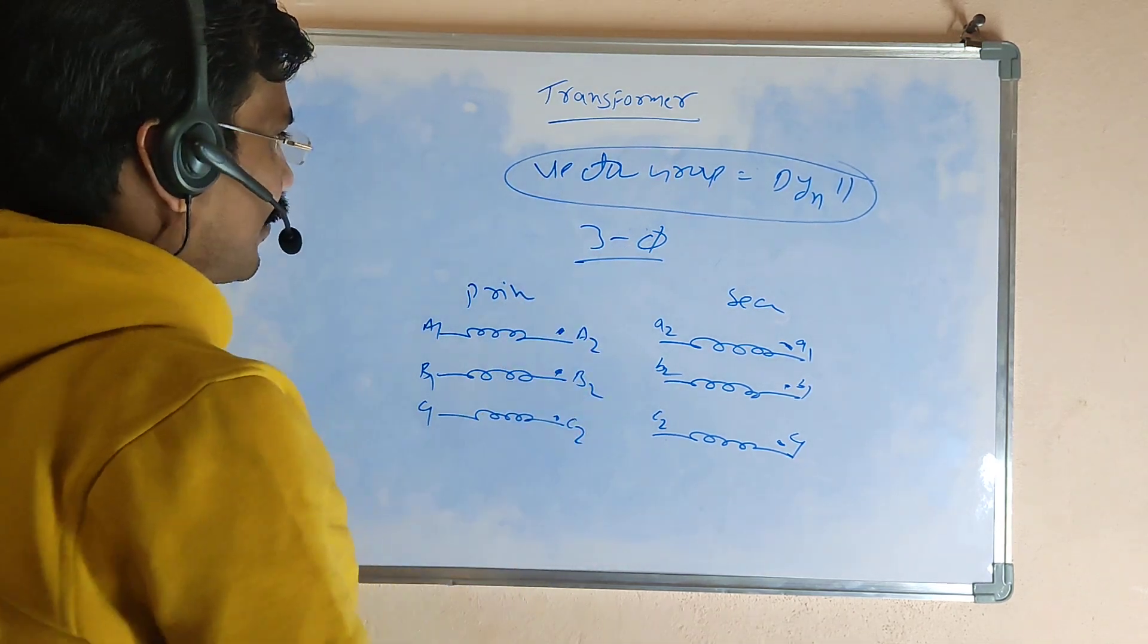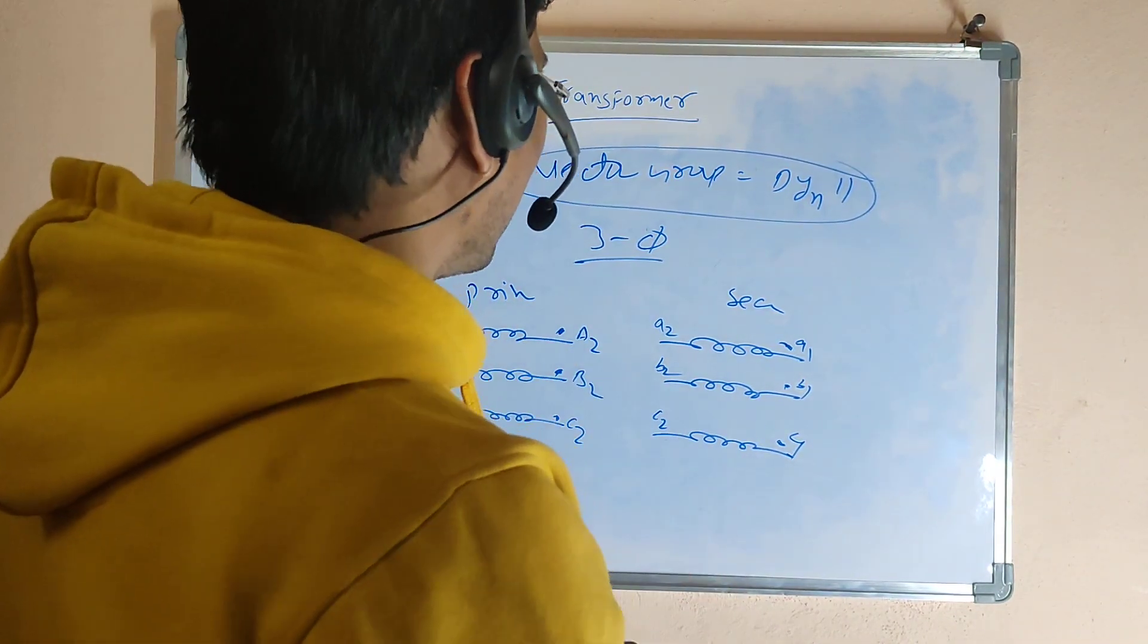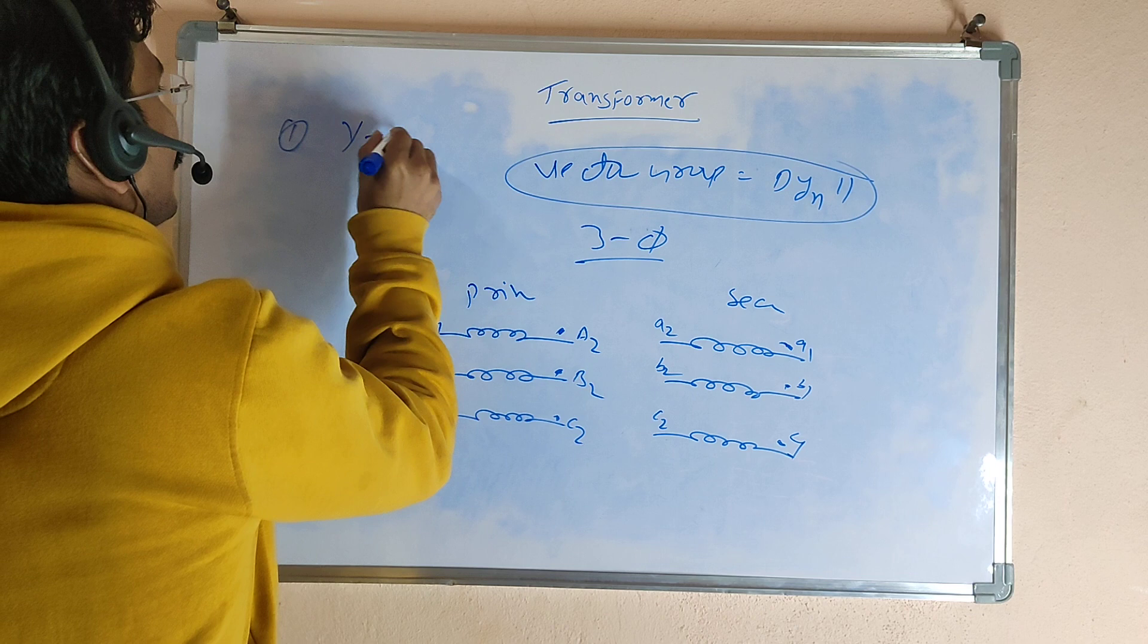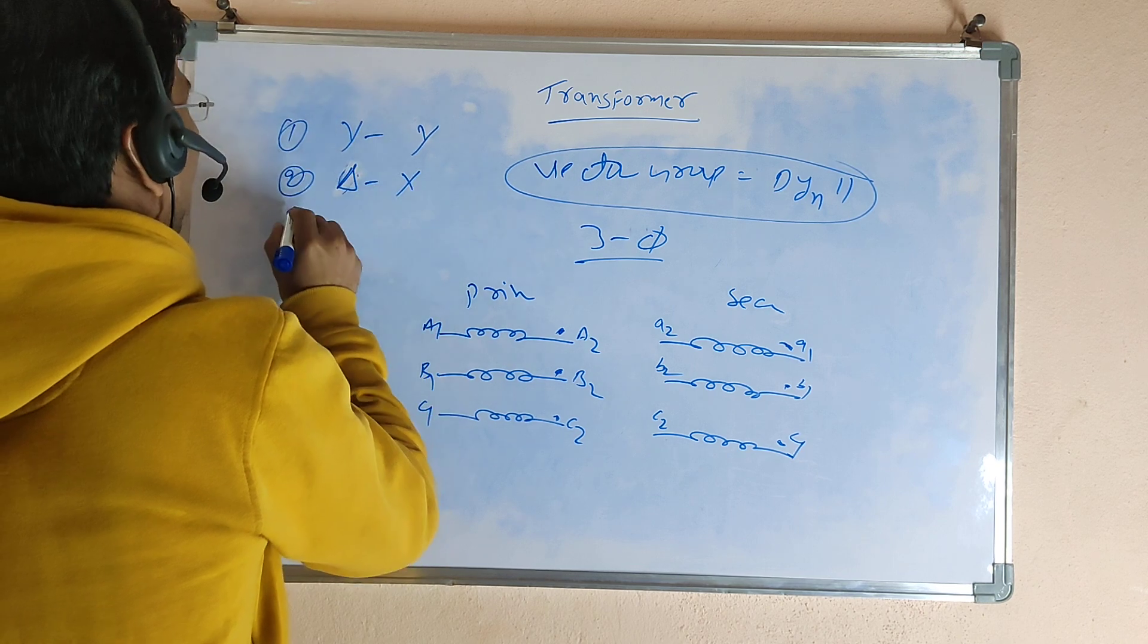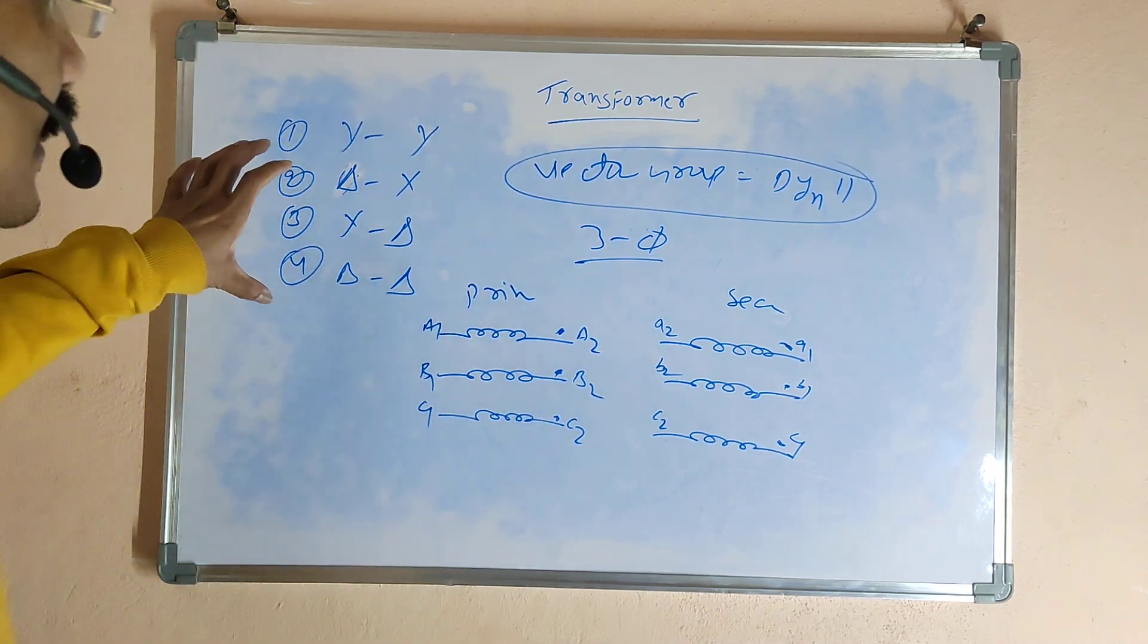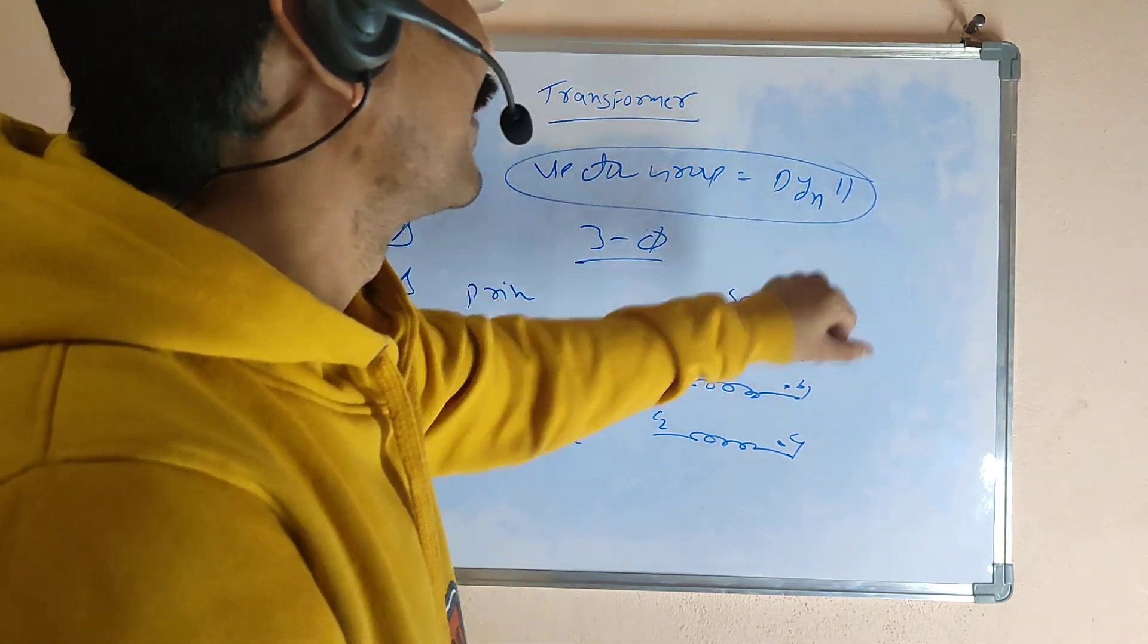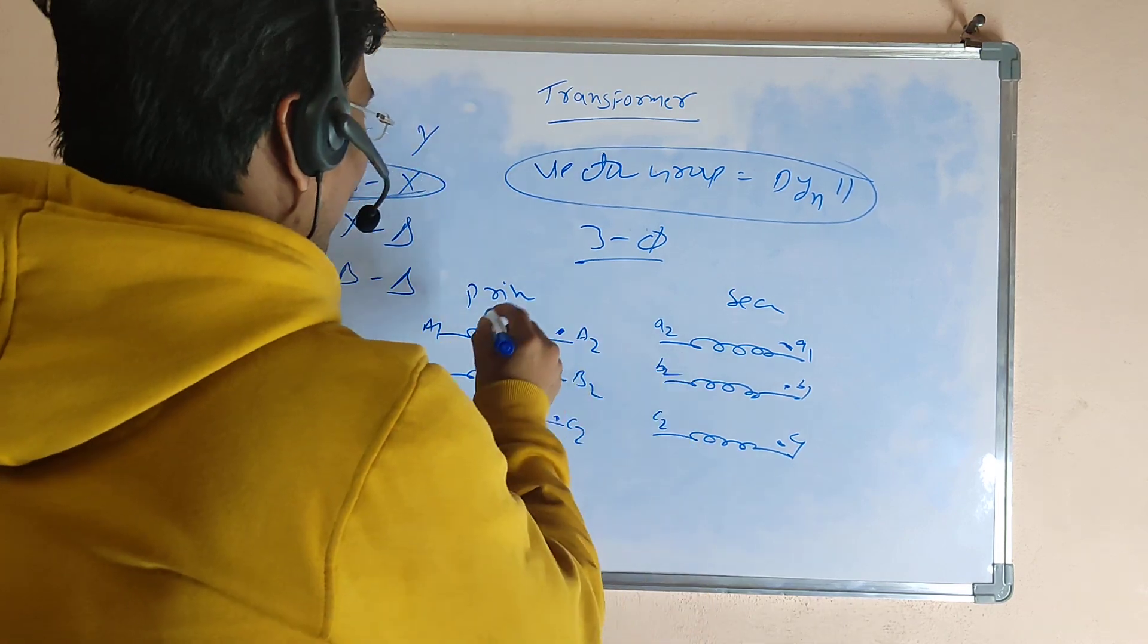The three-phase transformer primary side winding and secondary side winding connection has several possibilities: star-to-star, delta-to-star, star-to-delta, and delta-to-delta. My concept is only the vector group DYn11. D means delta, Y means star.